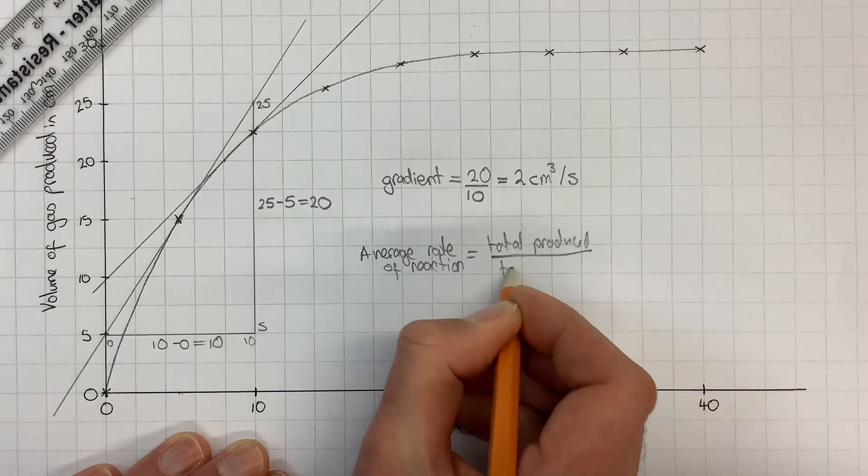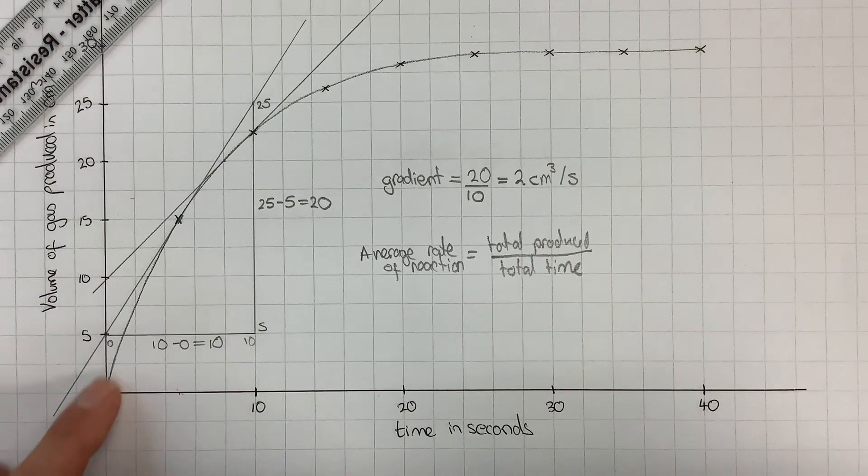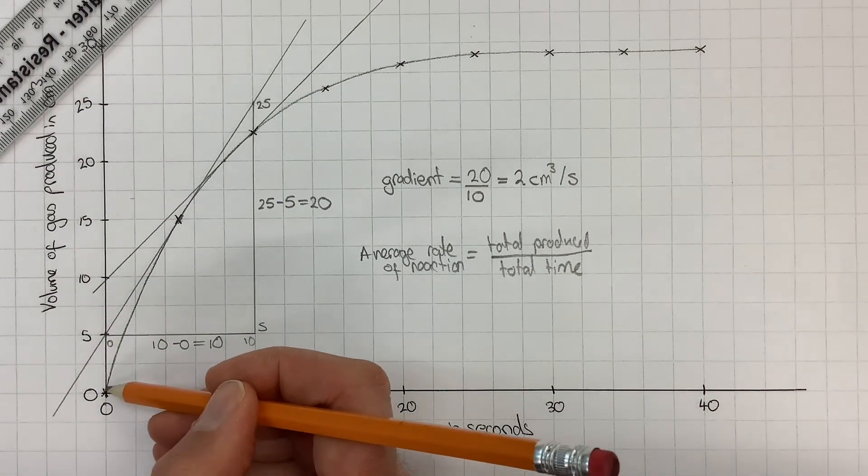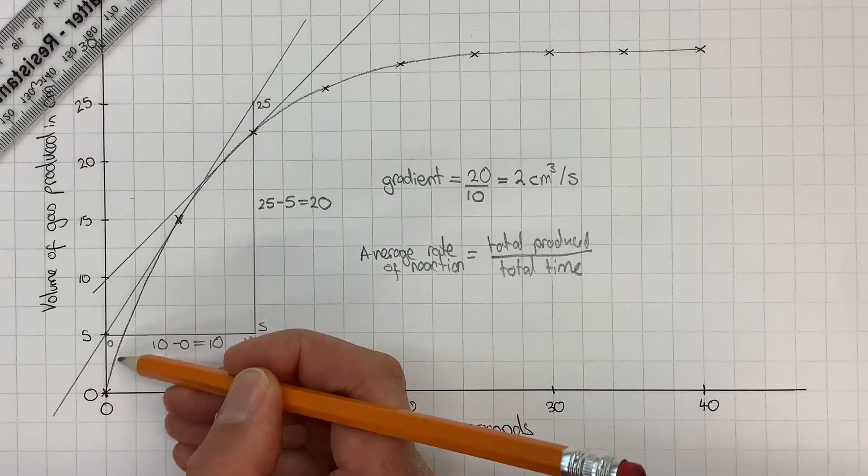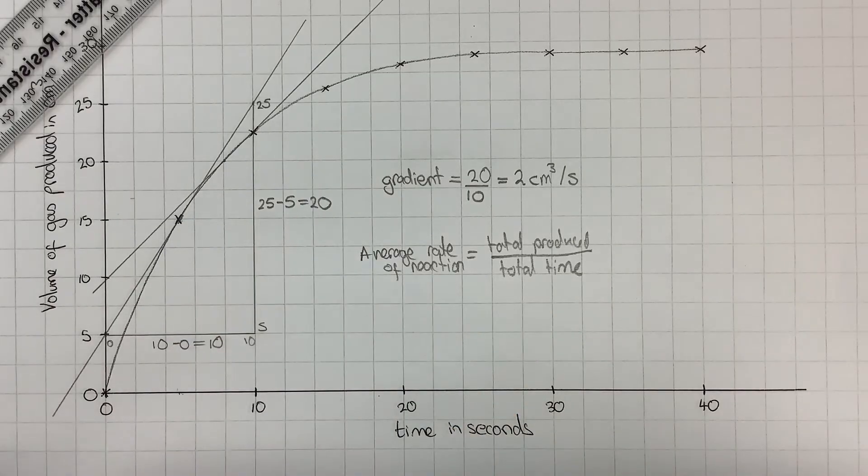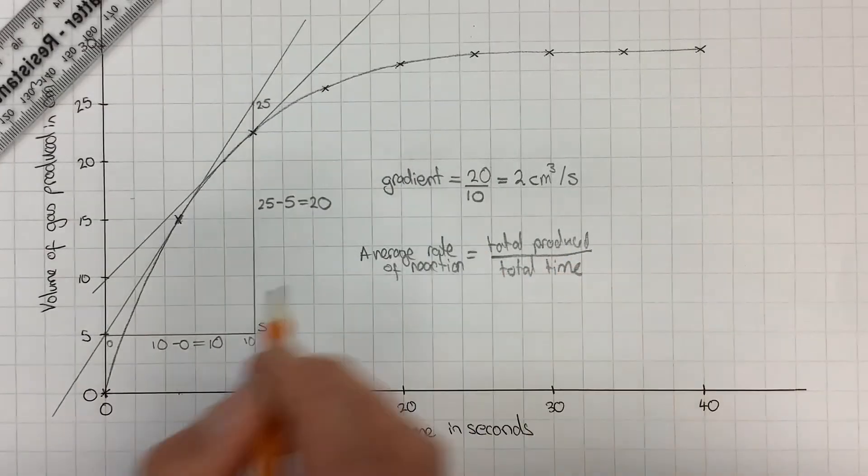We would be working out the average rate of reaction over the first five seconds. Since we can see that this has a higher rate of reaction at the start because it's a steeper gradient and then a more gradual rate of reaction later, it's not surprising that when we work that out, we get a smaller value.